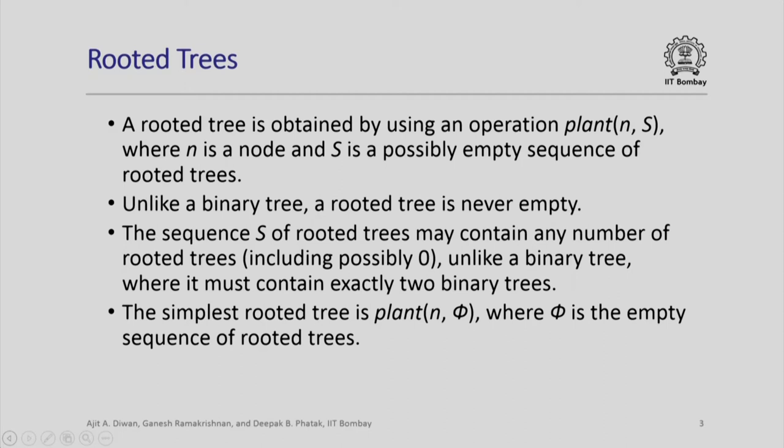Unlike a binary tree, a rooted tree is never empty — it will always have the root node together with a sequence of rooted trees, though that sequence itself may possibly be empty. The sequence s of rooted trees can contain any number of trees, possibly 0, whereas in a binary tree it always contains exactly two subtrees: the left and the right.